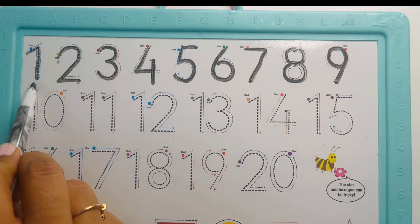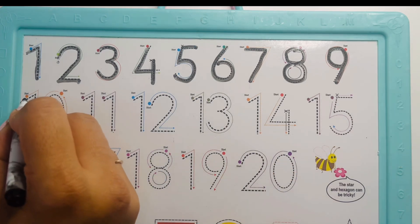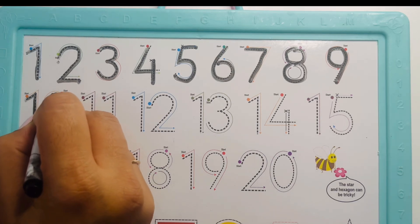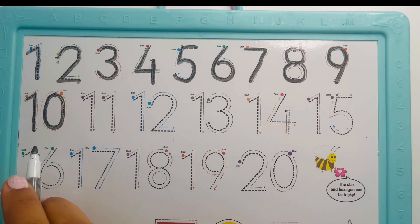One and number zero. Zero is like oval. Oval. Ten. Yeah, you did a great job.